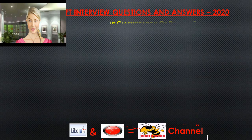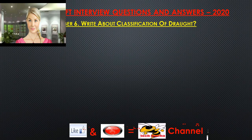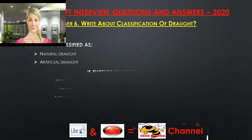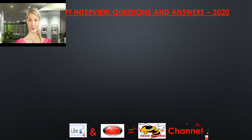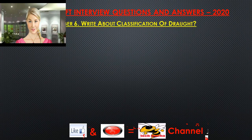Question 6: Write about the classification of draft. Draft is classified as natural draft and artificial draft. The artificial draft is further classified as steam jet draft, mechanical draft, induced draft, and forced draft.